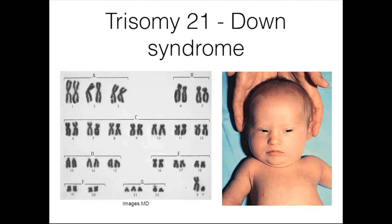One of the most common chromosomal disorders is Down syndrome, also referred to as Trisomy 21. A karyotyping image shows all 23 pairs of chromosomes, and if you look at chromosome 21, you can see there are three chromosomes there — that third 21st chromosome is what causes Down syndrome.